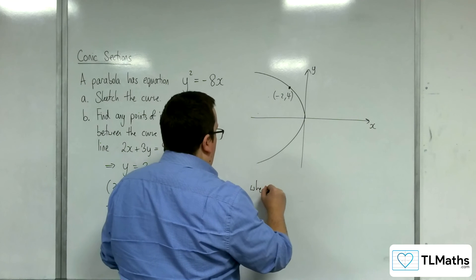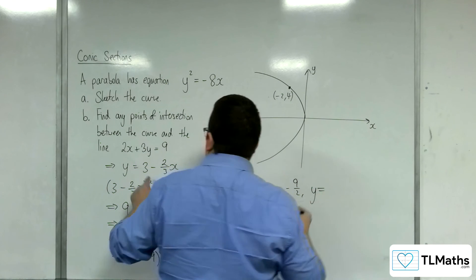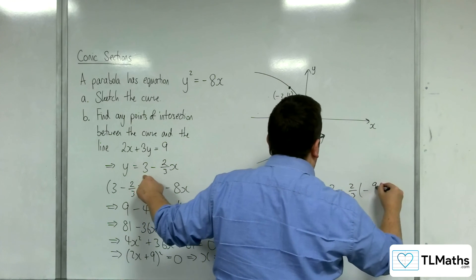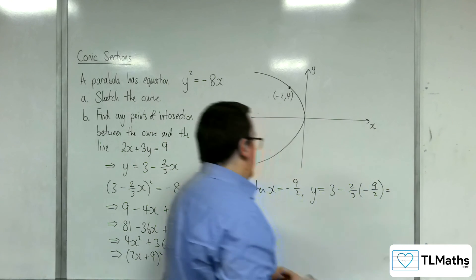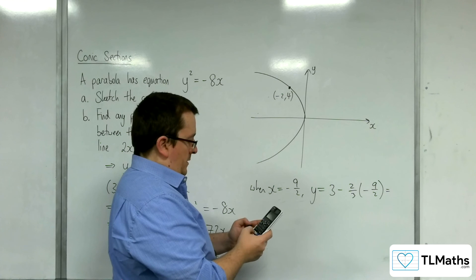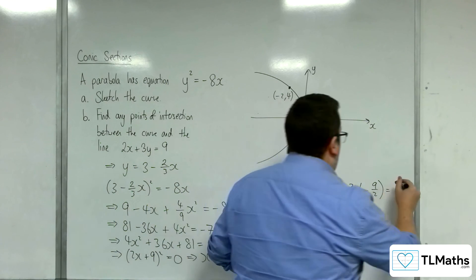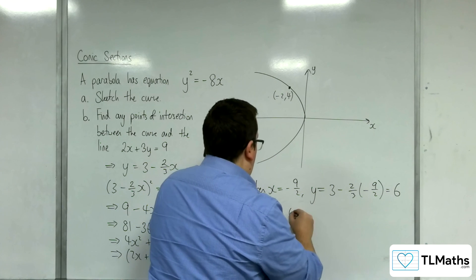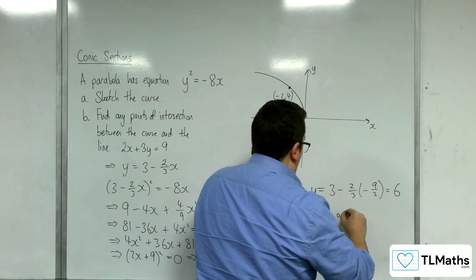So when x equals minus 9 halves, y is equal to 3 take away 2 thirds of minus 9 halves. So 3 take away 2 thirds times minus 9 halves. That gets a 6. So minus 9 halves, 6, is the only point of intersection.